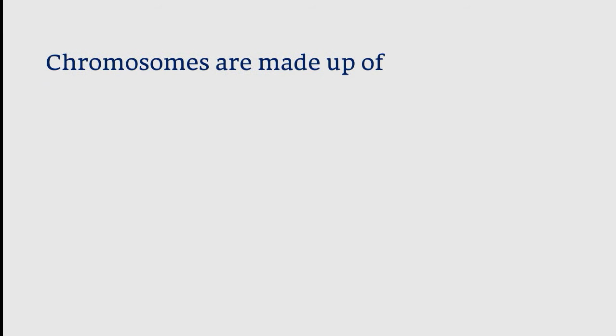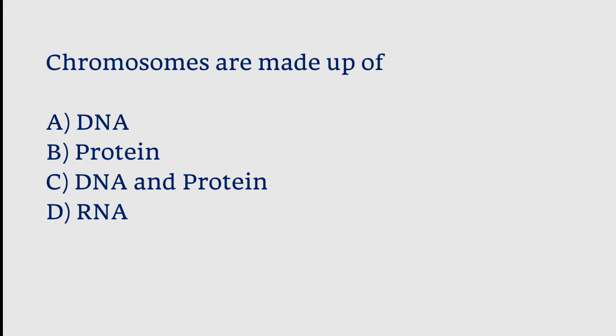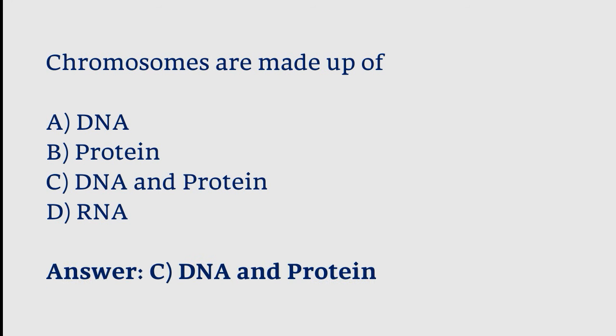Chromosomes are made up of: DNA, protein, DNA and protein, or RNA. The correct answer is option C. Chromosomes are made up of DNA and protein.